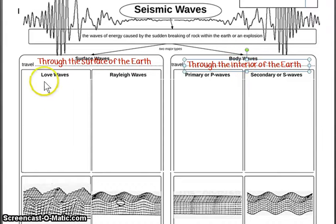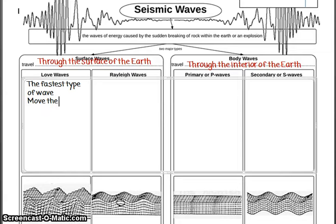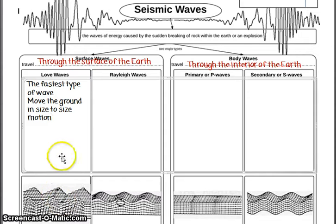For surface waves, there are two major categories. One is called love waves and another is called Rayleigh waves. Love waves are named after the person who first figured them out, and this is the fastest type of surface wave. They move the ground in a side-to-side motion. If you look at the diagram, you can see little bricks sliding away from you and coming towards you — that is the motion of love waves.